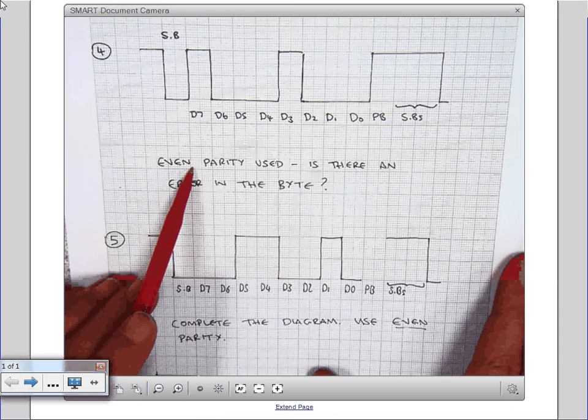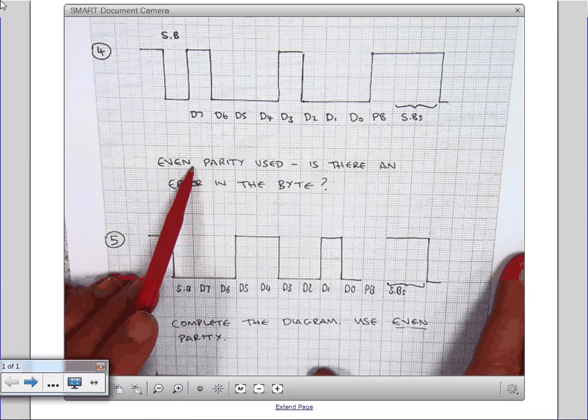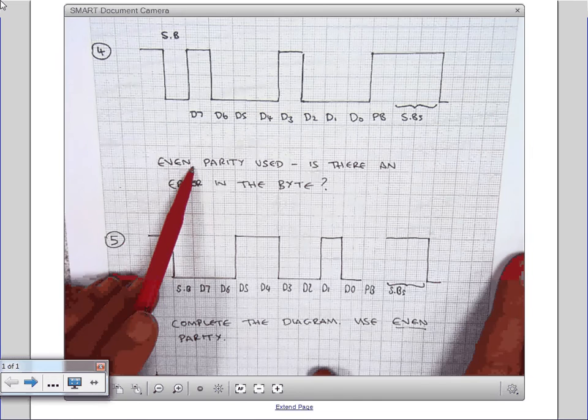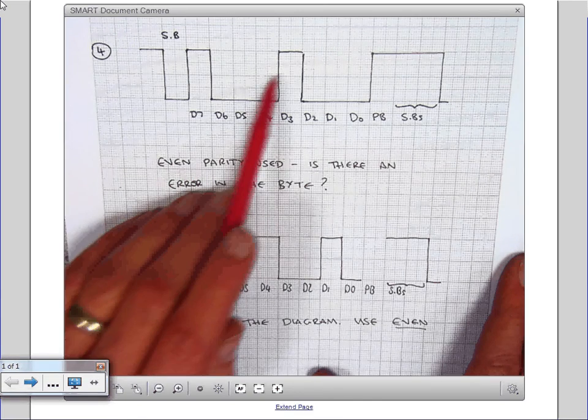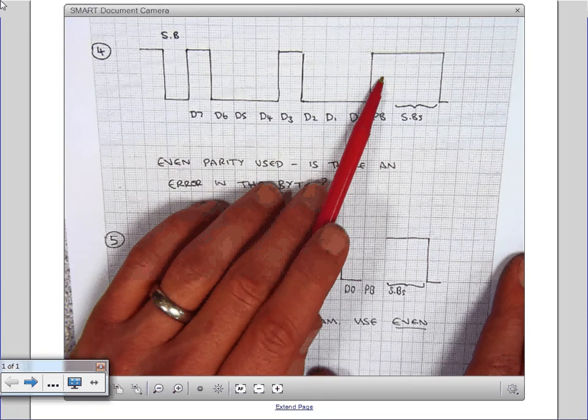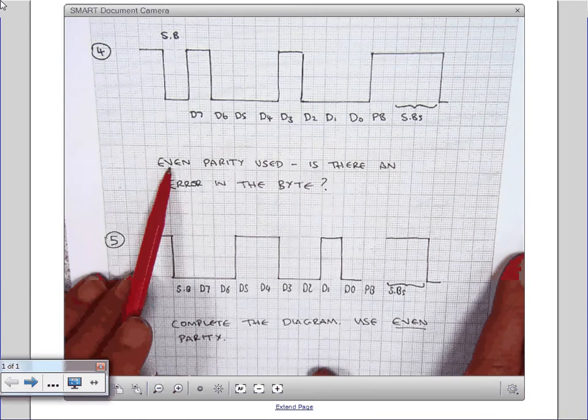Well, if even parity has been used, then including the parity bit, there should be an even number of ones. But we've got one, two, including the parity bit, we've got three ones. But if even parity has been used, we should have an even number. So there must be an error within that byte.